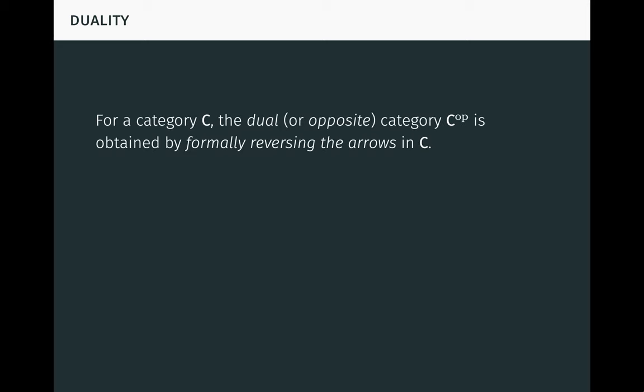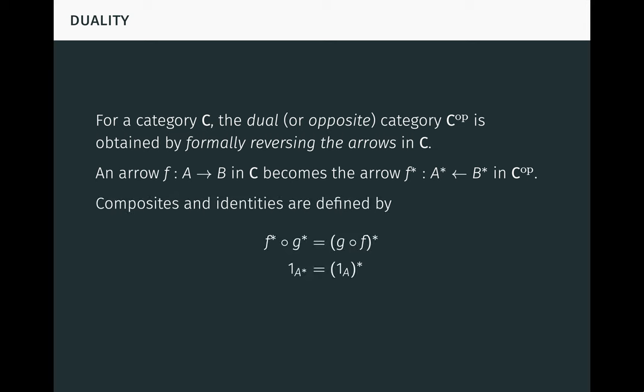For a category C, the dual or opposite category C^op is obtained by formally reversing the arrows in C. This means that an arrow F from A to B in C becomes the arrow F* to A* from B* in C^op. Here we use the star notation to remind ourselves that we're in the dual category, but it's important to remember that these are the same objects and arrows. The arrows have just been formally turned around. In particular, we're not talking about inverse arrows. Composites and identities are defined in a way that makes this work, but it's easier to see what's happening by looking at a diagram.